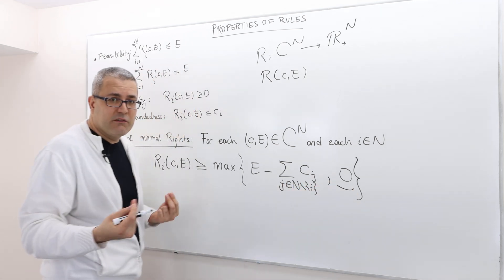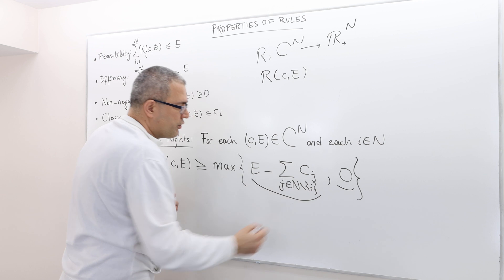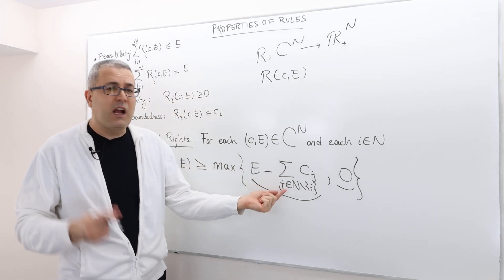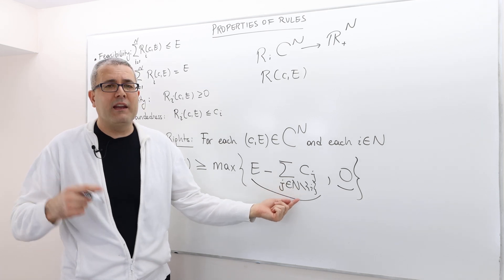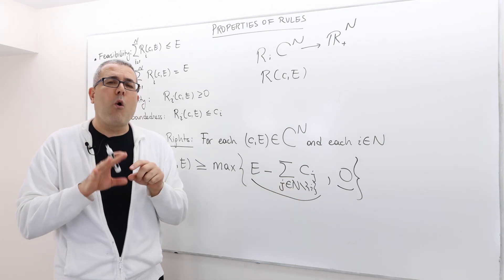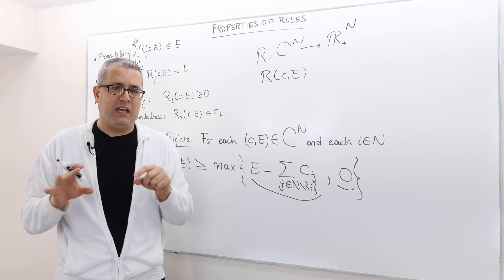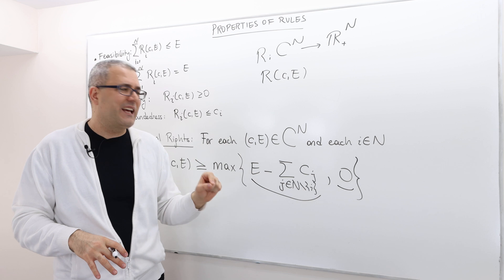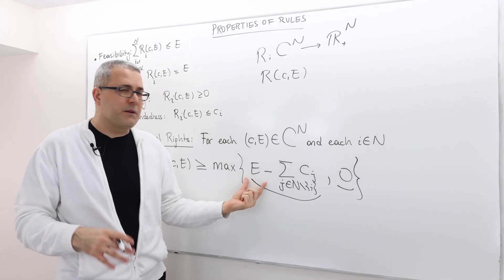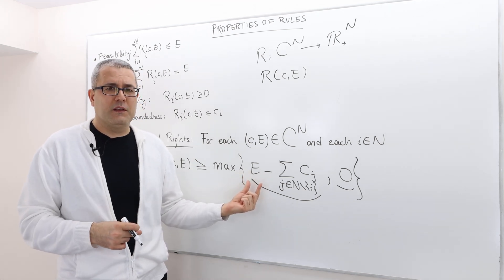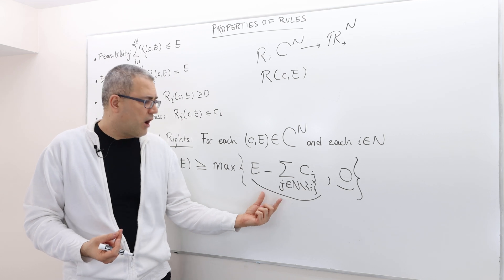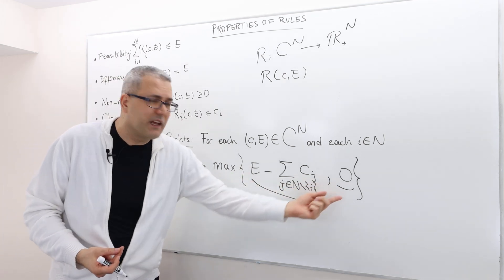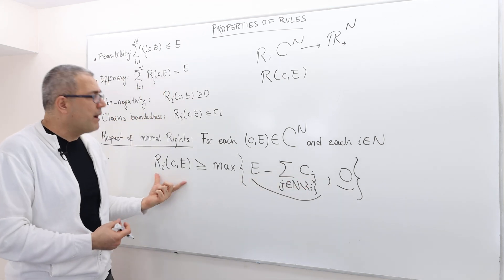Well, what are these two terms? On the one, it's zero. On the other, it should be E minus summation j coming from N minus i. So basically, all the other players' claims except player i. So we sum all the other players' claims and then subtract it from the surplus. So if it is positive, obviously this max is going to be this. If it is negative, well, then it should be zero. Because remember, we are looking at division rules which will always give non-negative number.